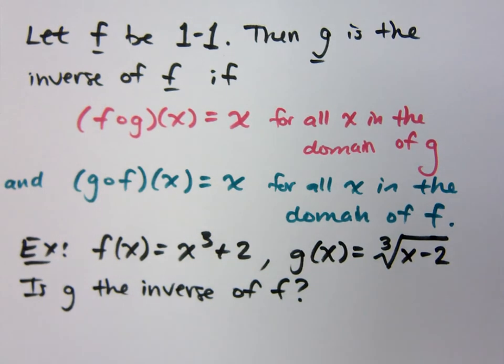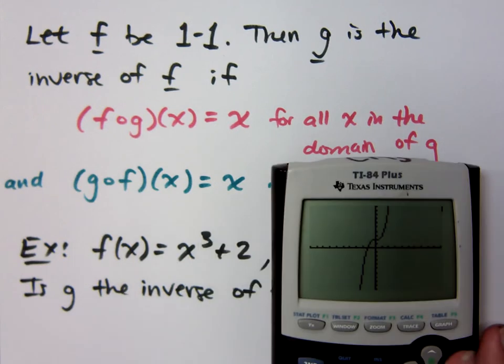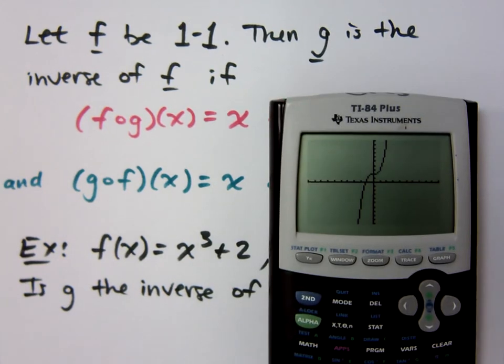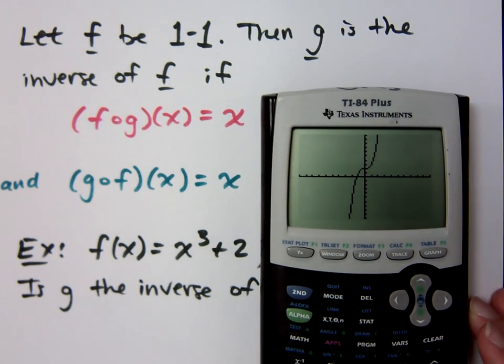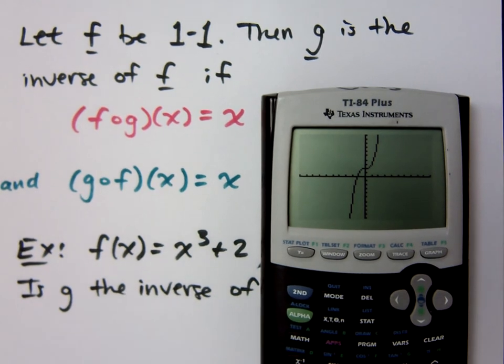Well, first you need to remember what x to the third plus 2 looks like. If I type in x to the third plus 2, is x to the third plus 2 one-to-one? Does it pass the horizontal line test? It sure does. So that makes it a one-to-one function, which means it has an inverse somewhere. Now I'm going to see if g is the inverse. And here's how you verify, without being able to look at a graph, that it is the inverse.